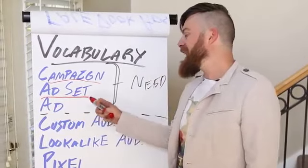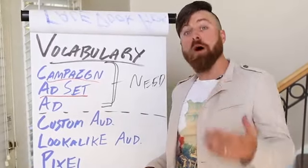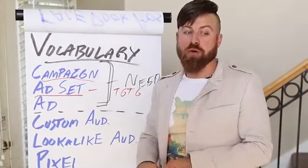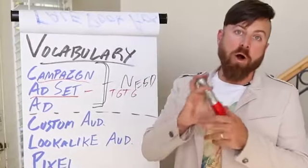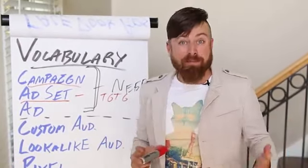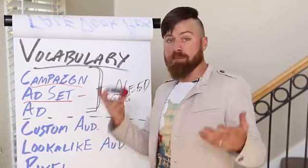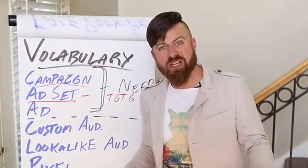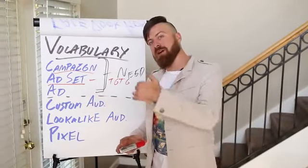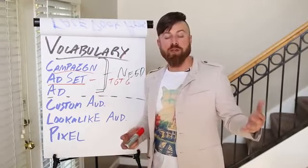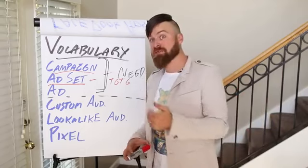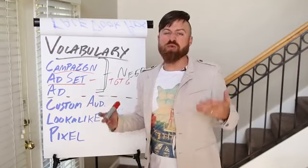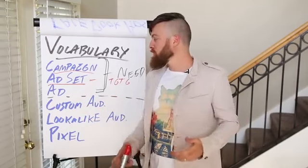The next element is an ad set. An ad set is where all the magic happens — it's where you define the targeting for the ad and who the ad gets shown to. If I'm selling markers, I'd need to target people interested in markers, whiteboards, or presentations — maybe teachers. That's where you define who sees your ad. If you're showing ads for dog toys to cat people, you're not going to make any money.